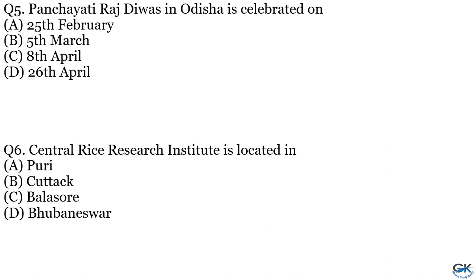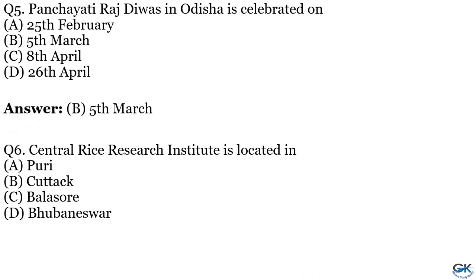Question No. 5: Panchayati Raj Day in Odisha is celebrated on which date? Option A: 25 February. Option B: 5 March. Option C: 8 April. Option D: 26 April. The answer is Option B, 5 March.